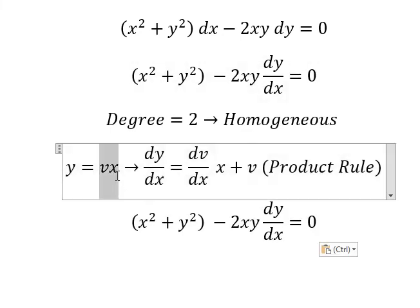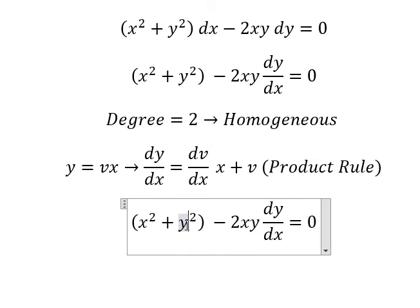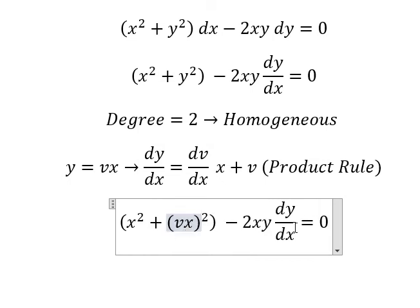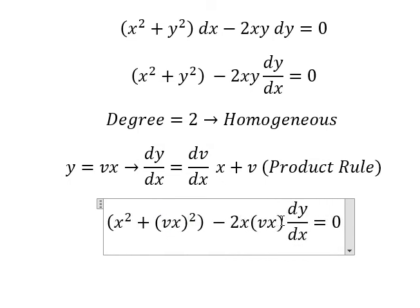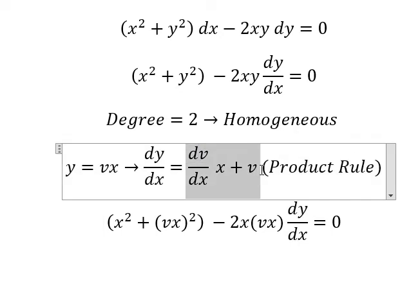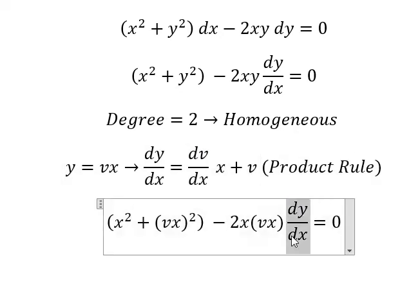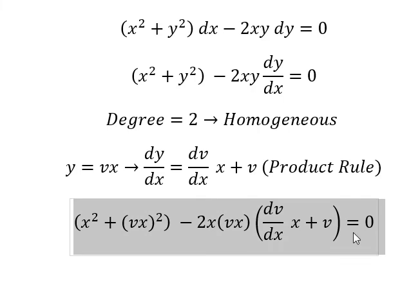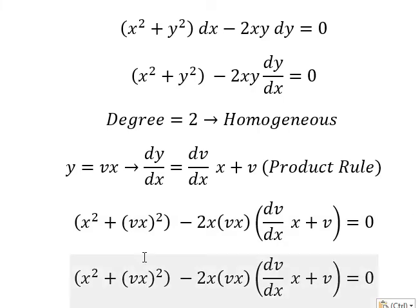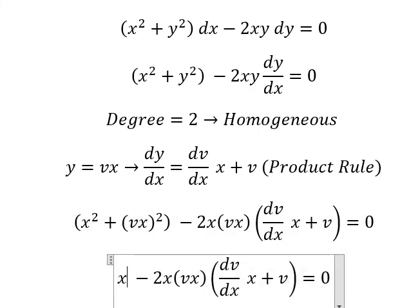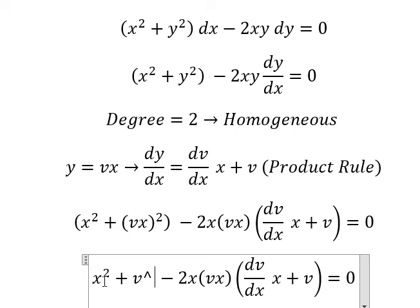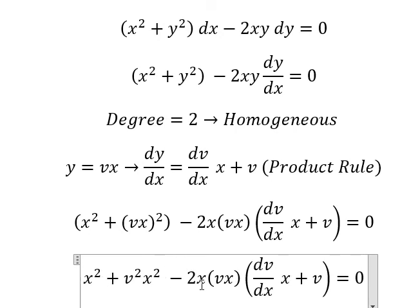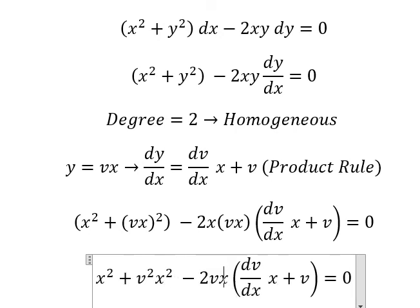So I will put this one here. And here. This one we change by this one. So this one we have x square plus v square x square. This one we have vx square.